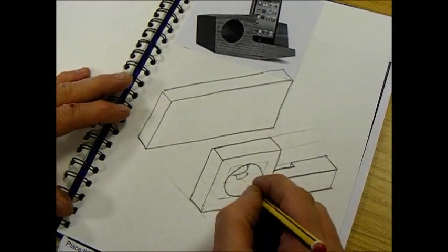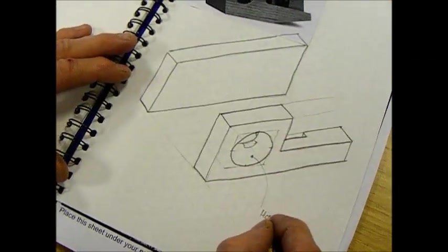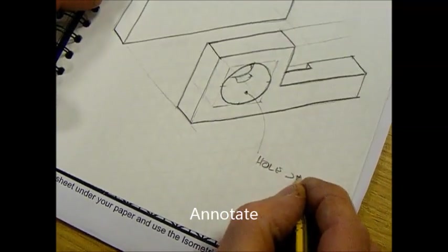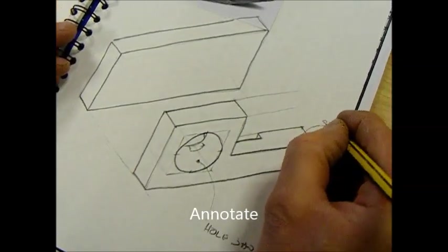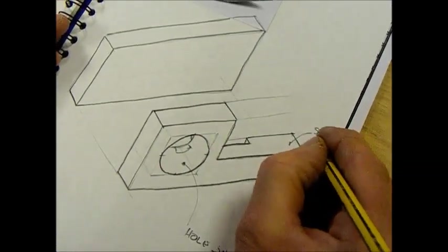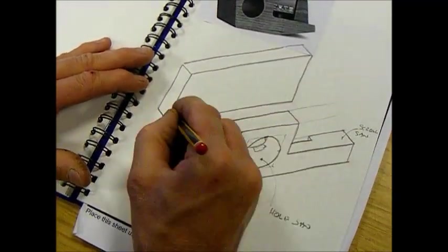Right, so you can annotate that with how you might make it. So that would be cut with a hole saw, that would be cut with a scroll saw possibly, and they will be held together with PVA glue.